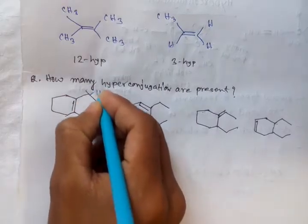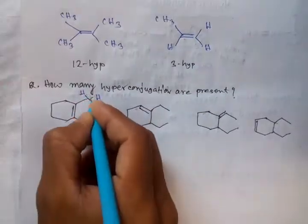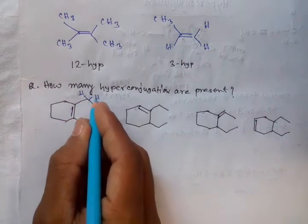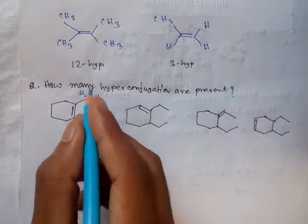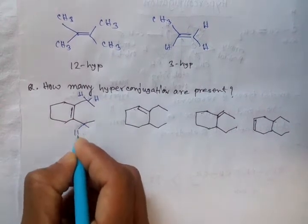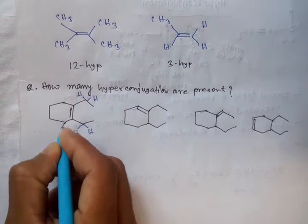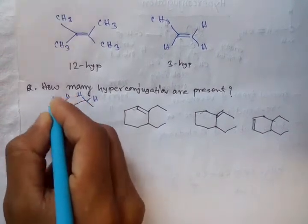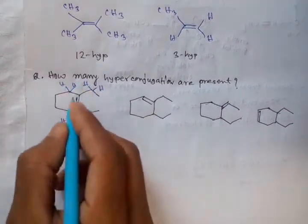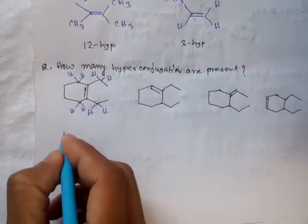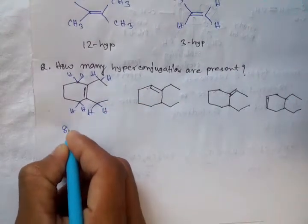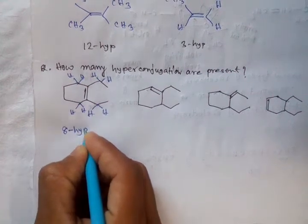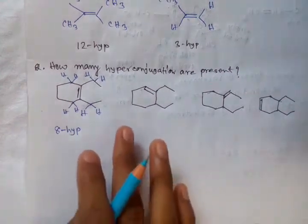For the first system: there are 2 alpha hydrogens with respect to this double bond on one side, also 2 hydrogens on another alpha carbon, also 2 hydrogens here, also 2 hydrogens here, and 3 hydrogens on another position — so there are 8 hydrogens responsible for hyperconjugation, giving 8 hyperconjugations.